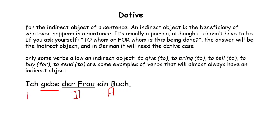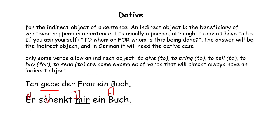The subject is always nominative. So the order is: Nominative, then Dative, then Accusative. If we have verbs like geben, bringen, erzählen, or kaufen in a sentence, and after that there is a person, then we use dative, followed by accusative for the thing. For example: 'Er schenkt mir ein Buch.' Here 'Er' is nominative, 'mir' is dative, and 'ein Buch' is accusative.